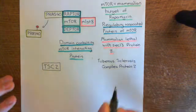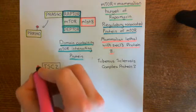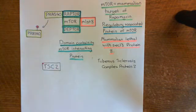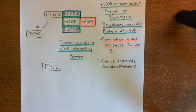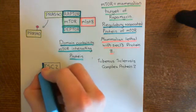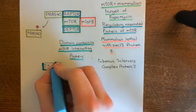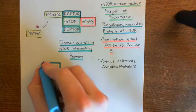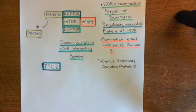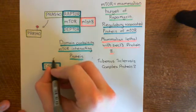TSC2 is the second component of the tuberous sclerosis complex — TSC stands for tuberous sclerosis complex. I want to colour the phosphate group that's going to be added on to the tuberous sclerosis complex protein 2. So AKT is going to phosphorylate the tuberous sclerosis complex protein 2.